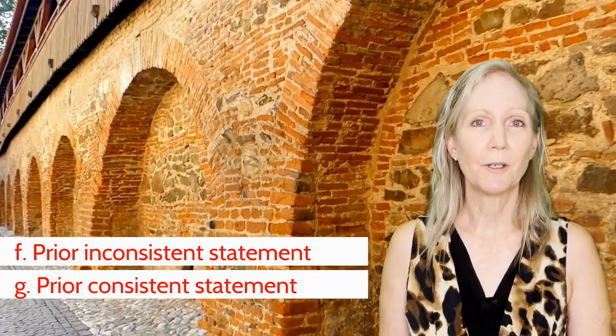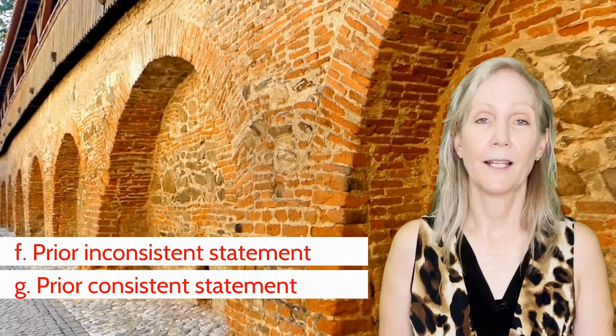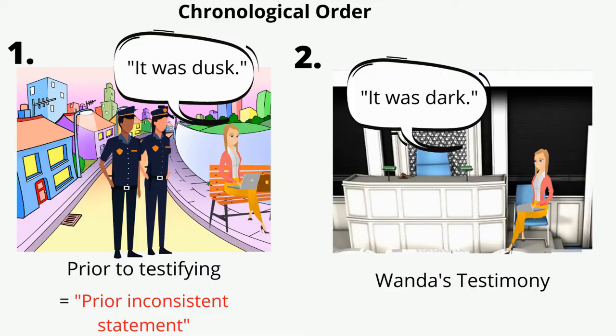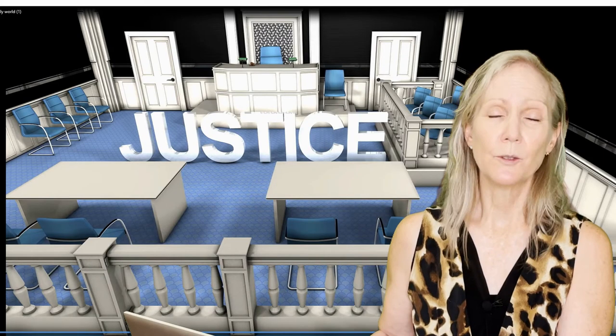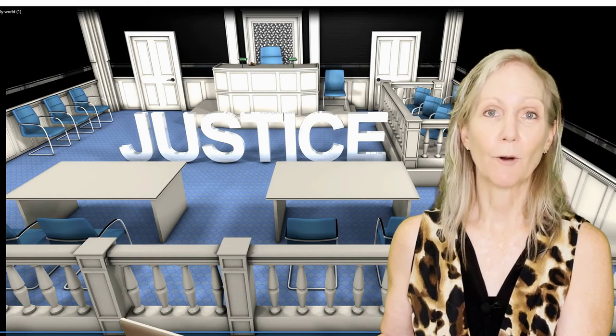There are also exceptions for prior inconsistent statements and prior consistent statements. A prior inconsistent statement is a prior statement made by the witness that is inconsistent with the witness's trial testimony. This would come up during cross-examination — for example, pointing out that the witness said something different out of court before these events. It is a tough one to catch and doesn't come up too often in mock trial, but it could appear in any given year's case packet.